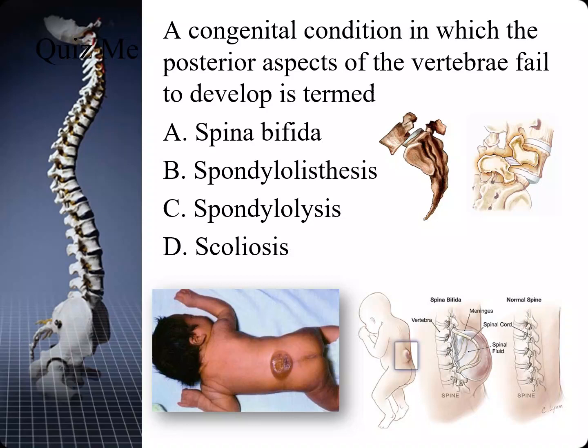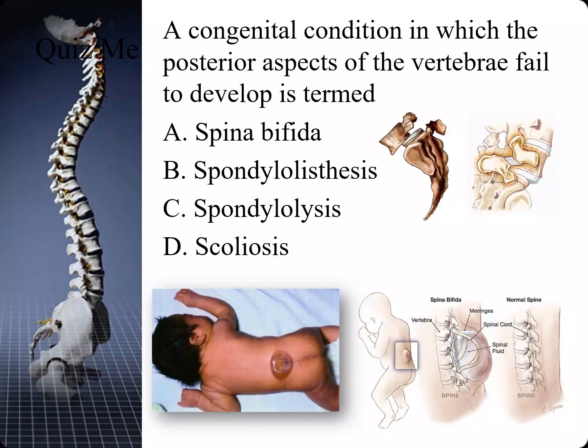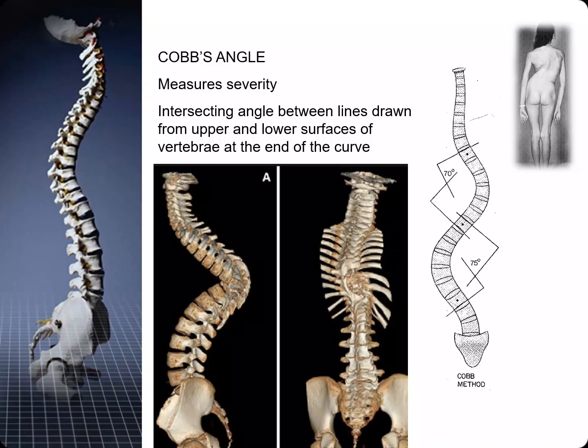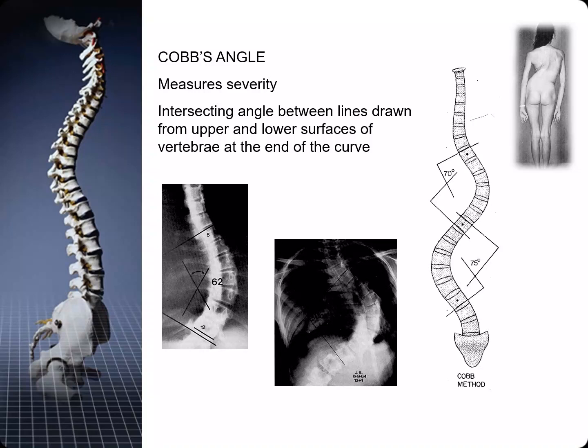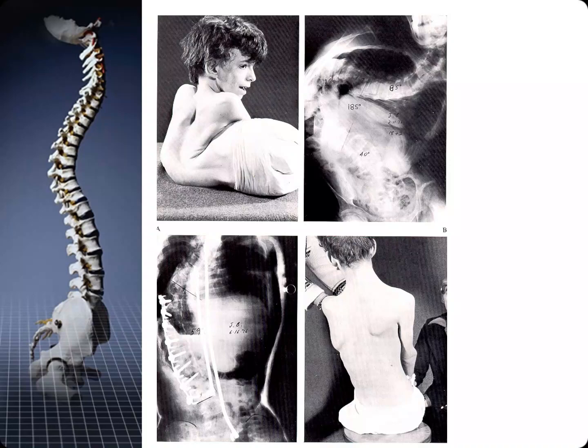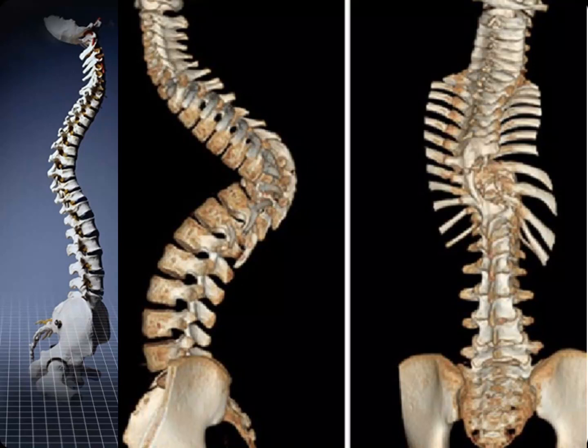On the other end of the age spectrum, we can have congenital problems such as spina bifida, spondylolisthesis, and scoliosis. Scoliosis increases in severity with age, so we measure what is called Cobb's angle to determine when and if to intervene and try to do Harrington rods or some other correction. Here we see some extreme cases of scoliosis, and in some cases it can even cause death. The curvature of the spine impacts the lungs and breathing, and if there is no room for movement, the patient expires.